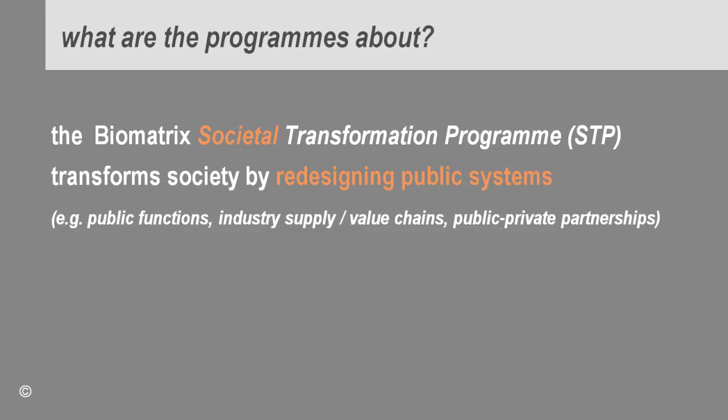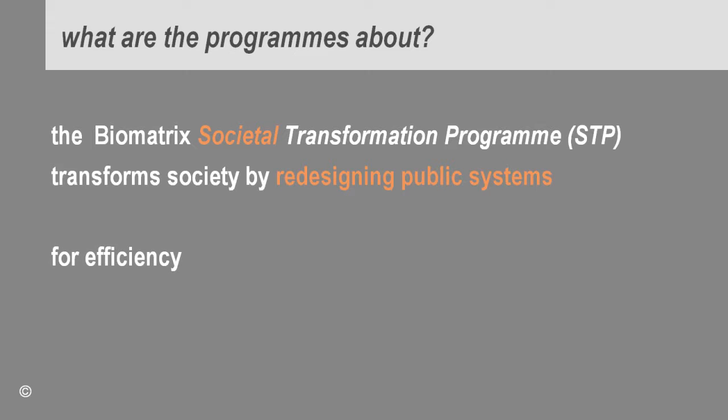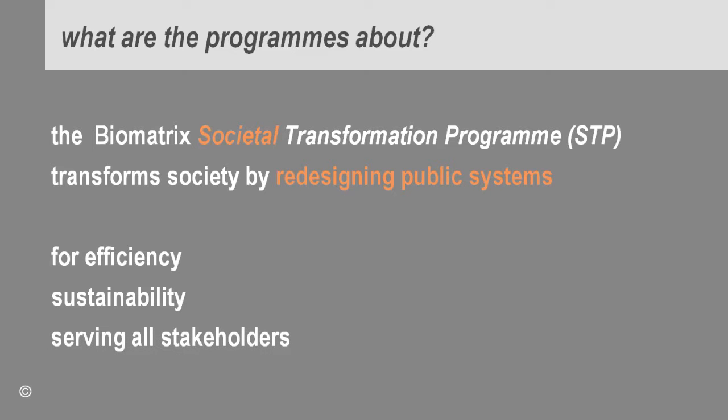How does it transform these public systems? It transforms them for efficiency — all supply chain work is about increasing efficiency. But more importantly, it transforms those systems for sustainability in terms of planetary resources and limits. And it transforms them so that they serve all stakeholders, because most public systems are self-serving in terms of the organization and don't serve the larger society, life in general, or the planet.